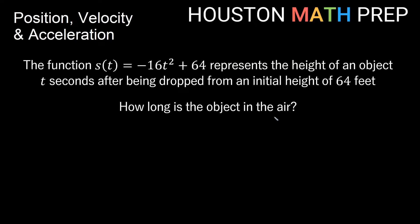We want to know how long the object is in the air. To answer that, we need to find when it hits the ground. That's about position, so we use the position function. When it hits the ground, the height — the position — equals zero.